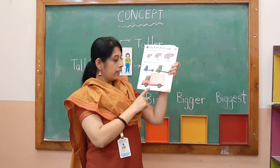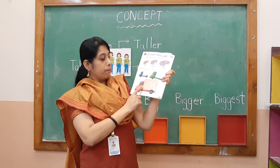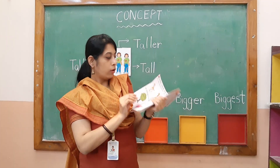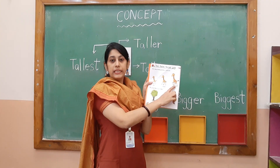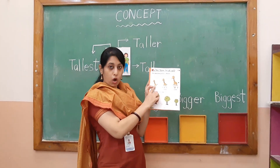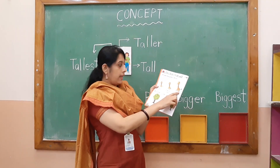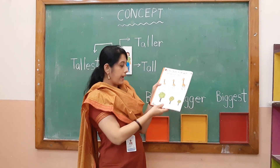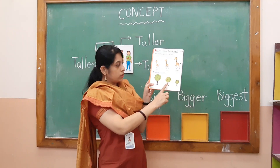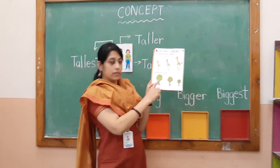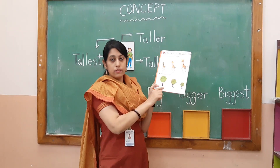Here three different trucks are there. And you can find here three giraffes — one is tall, the other one is taller, and this one is tallest. And three different trees are there: tall, taller, tallest. Colour and circle the tallest tree.